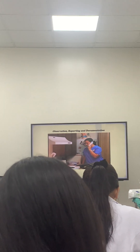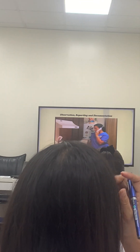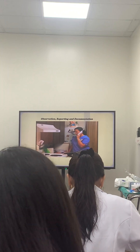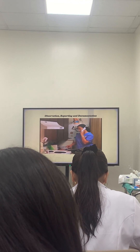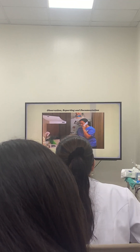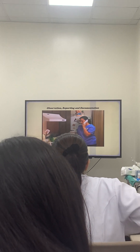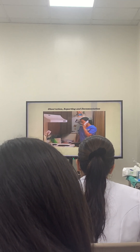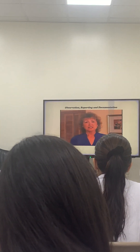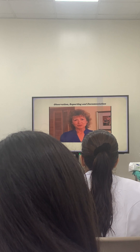When reporting to the nurse, you would say: 'I'm visiting with Mr. Jones today, and I see three red-raised areas about half an inch in diameter on his left forearm. He believes it might have been an insect bite, but I'm not quite sure about that.' This is an objective report because it is factual and measurable.